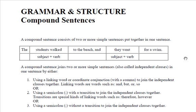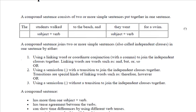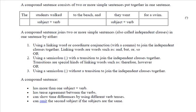Now, there's three different ways that we can join these independent sentences together. And they are mentioned down here. We can use a linking word, or coordinate conjunction, with a comma, which we have in this sentence.